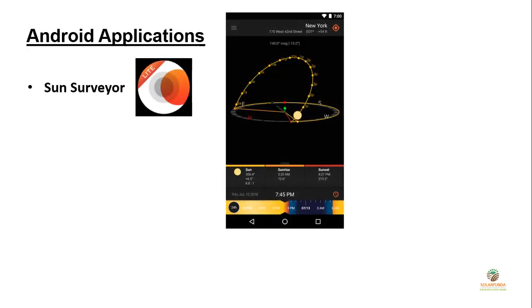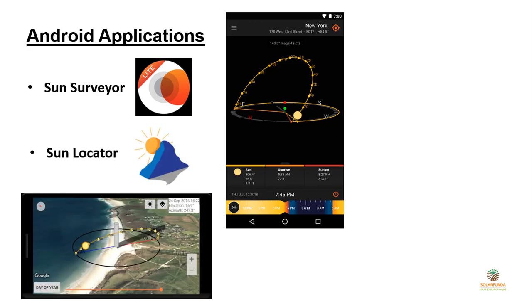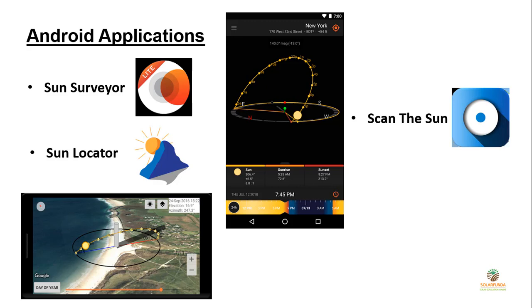I have something special — here are some Android applications helpful for site survey. First is Sun Surveyor, which shows the real-time location of the sun throughout the year, month, and even by the hour. It has a compass that shows the exact location of the sun, so you can find where the sun lies in winter or summer. Next is Sun Locator, a similar application where you can also analyze shadows and see the position of the sun in augmented reality across various time zones. Next is Scan the Sun — a very cool application. Let's see how it works in this video.